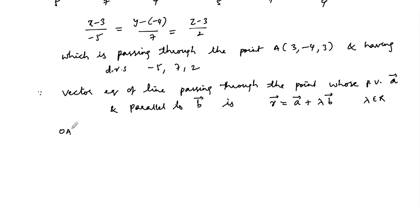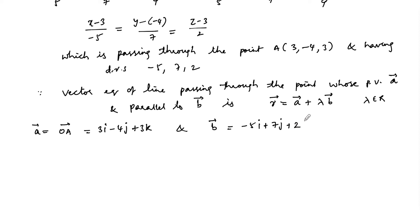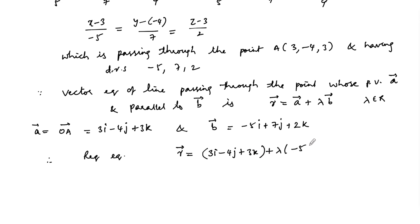So here the position vector a can be written as 3i minus 4j plus 3k, and the direction ratios of the parallel vector b equals minus 5i plus 7j plus 2k. Therefore the required equation is r equals (3i minus 4j plus 3k) plus lambda times (minus 5i plus 7j plus 2k). This is the required vector equation of the given line which is in Cartesian form.